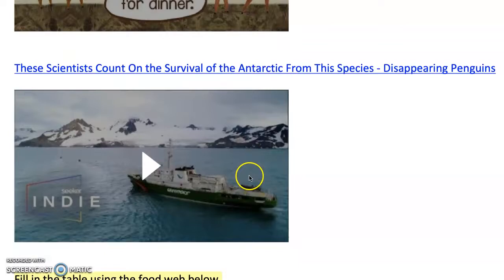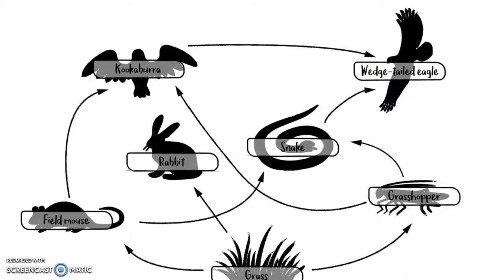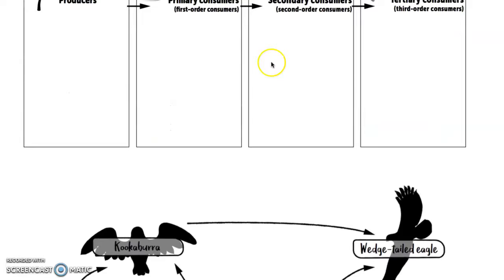There are some activities for you to do — fill in the table using the food web below. Identify the producer, then the primary, secondary, and tertiary consumers. To start: the producer is grass, primary consumers are the field mouse and the grasshopper, a secondary consumer is the snake, and the tertiary consumer is the wedge-tailed eagle. You can write your own responses into the box.